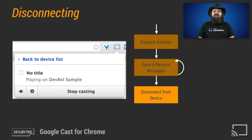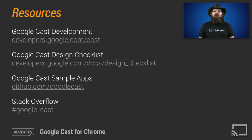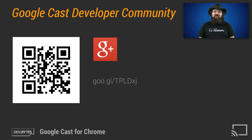And there you have it, the lifecycle of a Cast web sender. We're very excited to see what you build with Google Cast. You can discover more about the details of the Google Cast SDK at developers.google.com/cast. The design checklist will go a long way in guiding you down the path to creating great second screen applications. You can find sample Cast sender and receiver apps at github.com/googlecast. Use Stack Overflow for questions and comments — tag them with google-cast. In future DevBytes, we will dive deeper into the Cast sender SDK for each platform and the Cast receiver SDK. Join the Google Cast developer community on Google Plus for pro tips and share your experiences. Happy Casting.